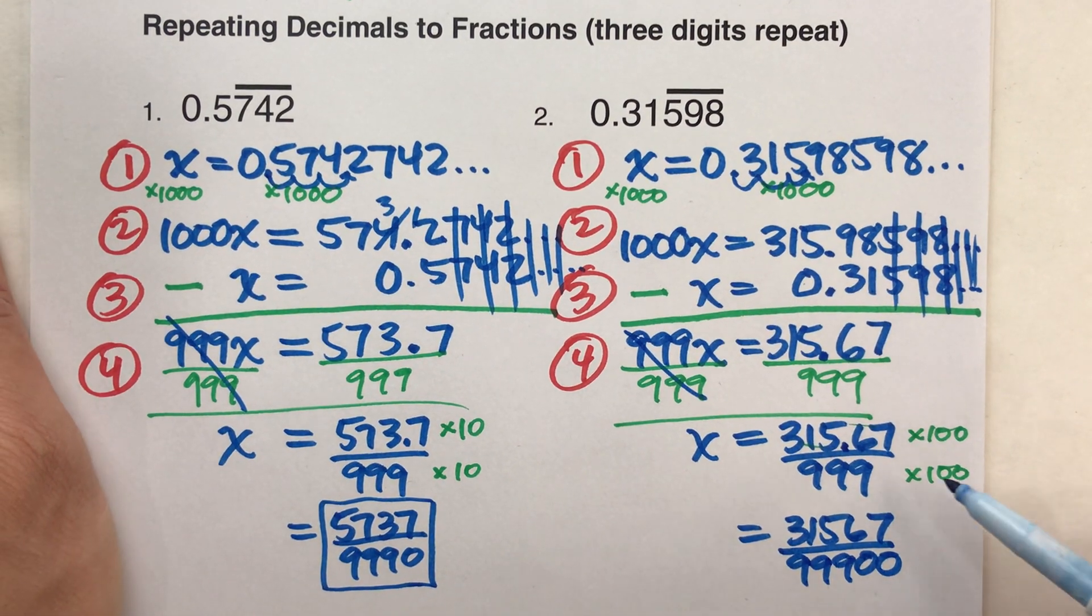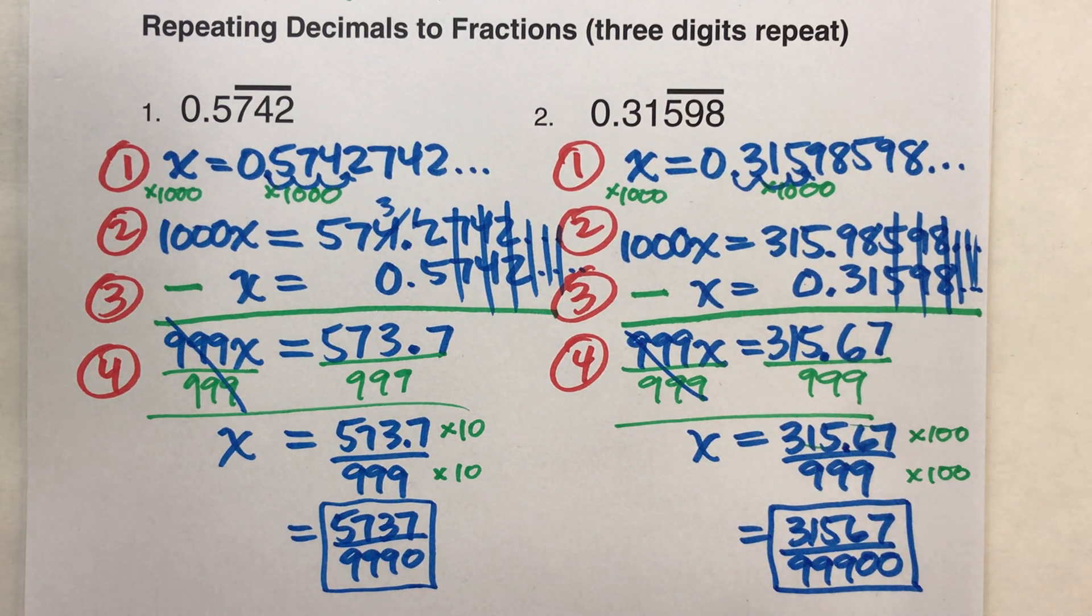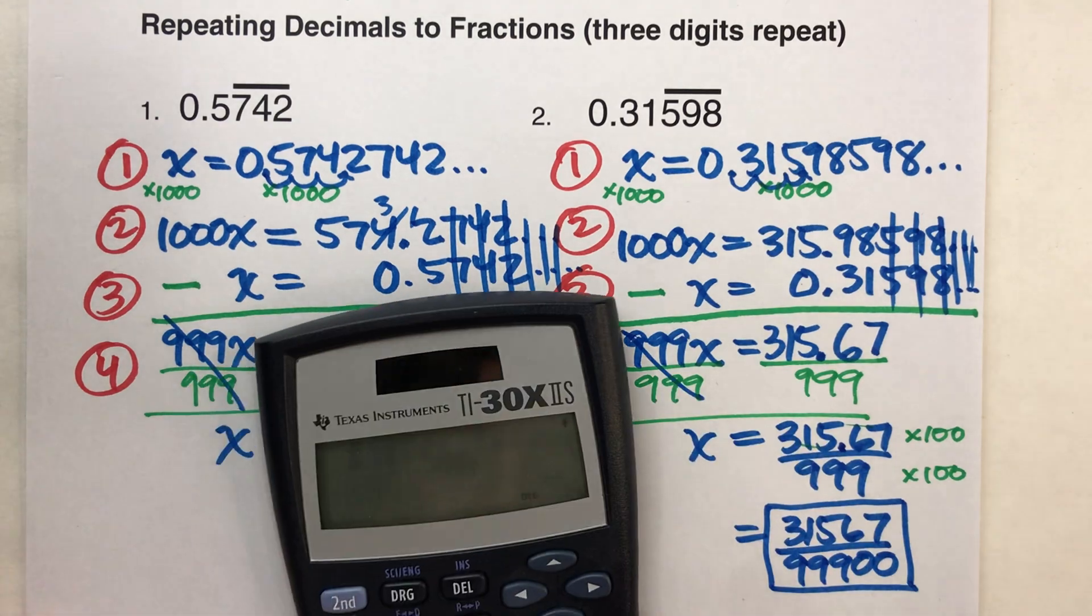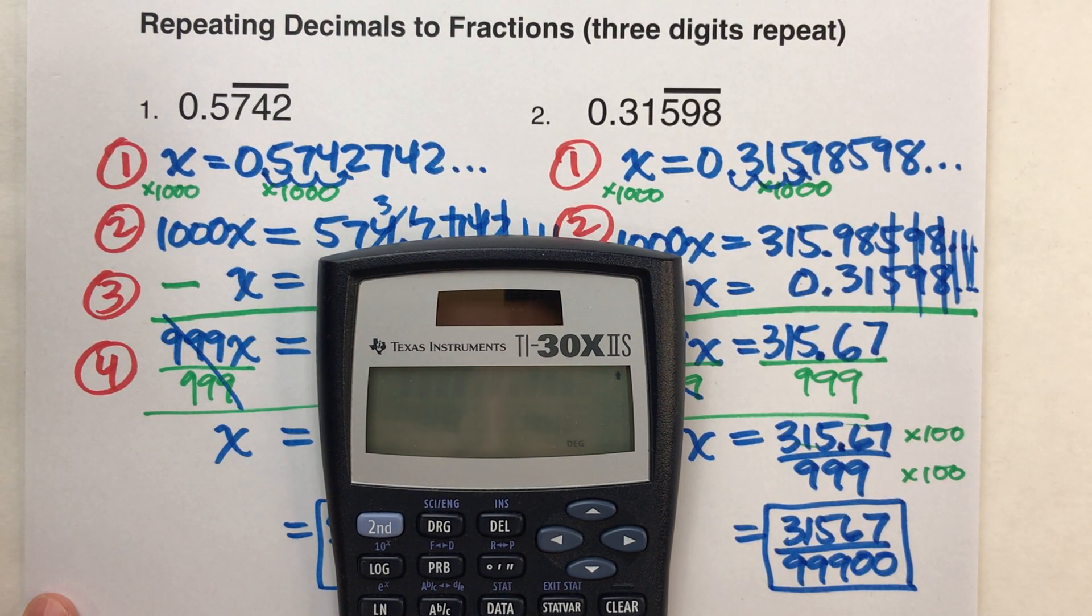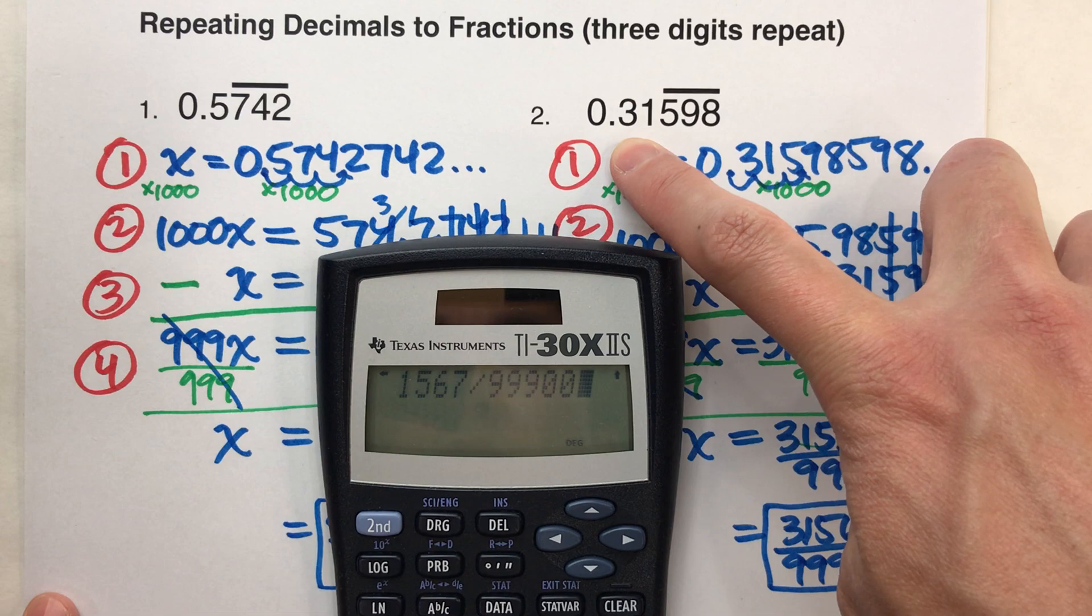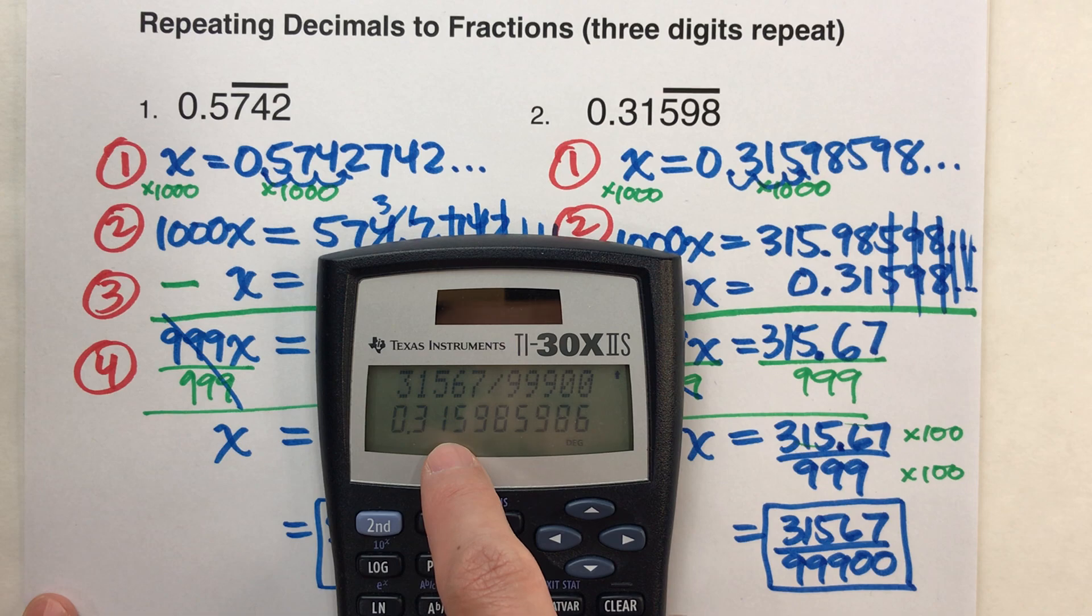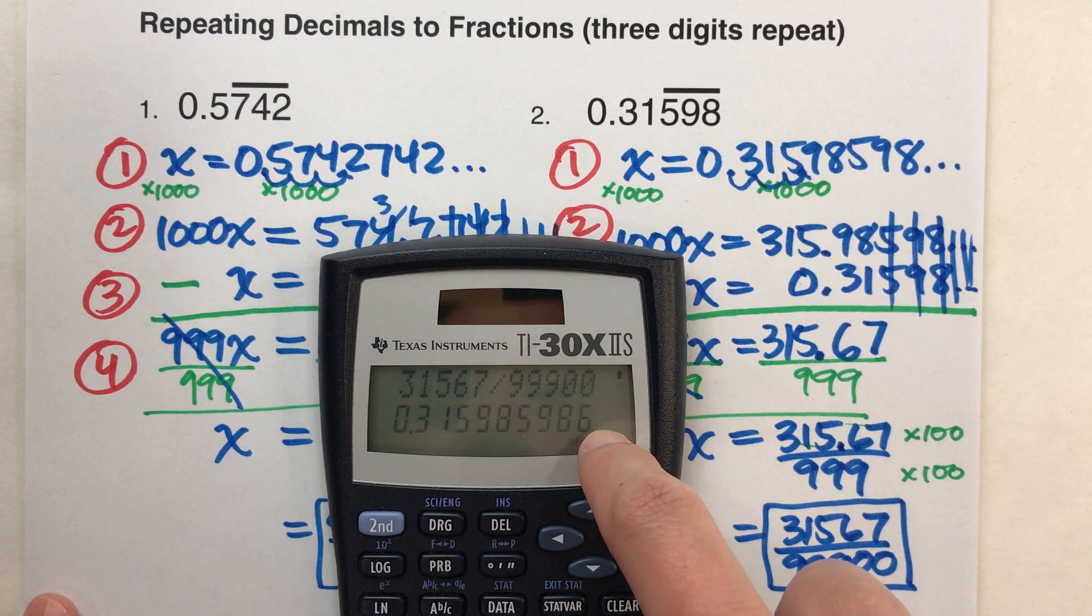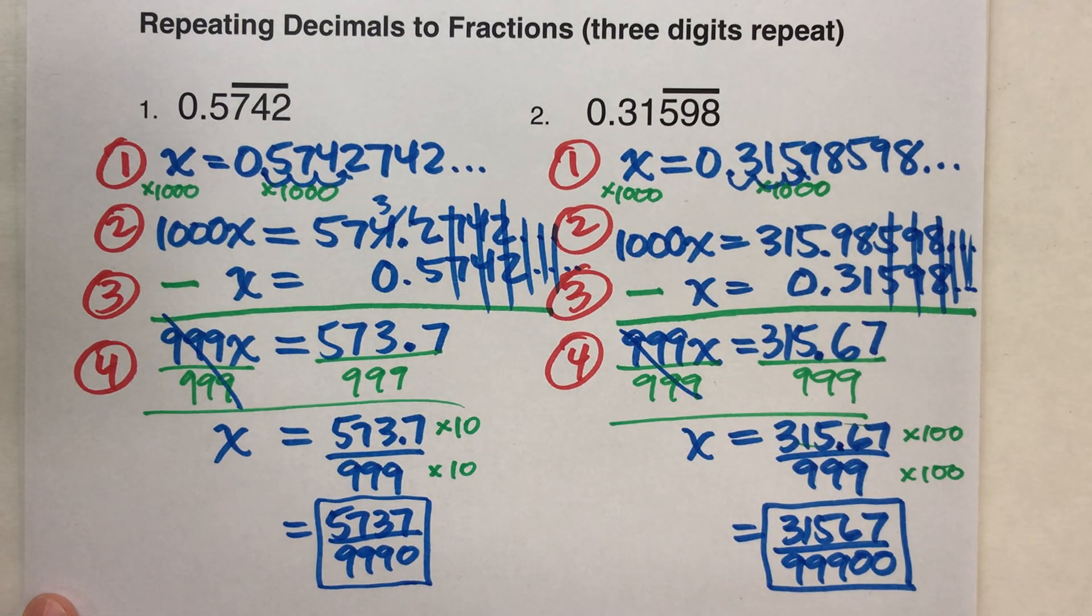Woo! And this is our fraction. And to check, to make sure I'm right, we should plug it into the calculator and see. 31567 divided by 99900. It should get me 0.31598598598598. Look at that, 0.3598598. And, well, it would keep going, but of course it doesn't fit on the calculator.